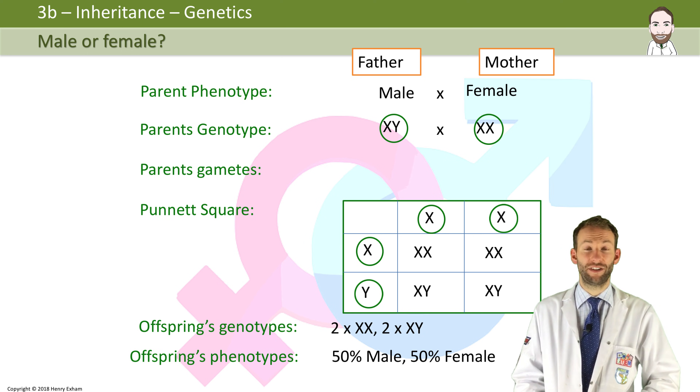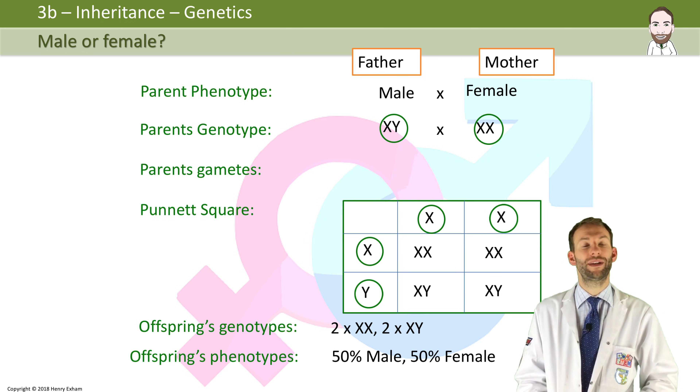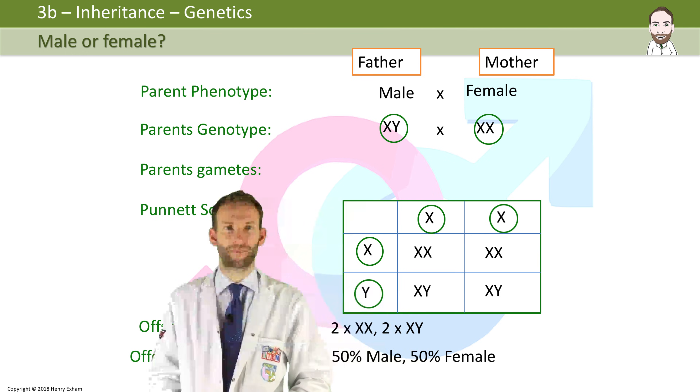That's just a probability. You could have five children and they may end up all being girls, but each time you get pregnant there is a 50/50 chance.